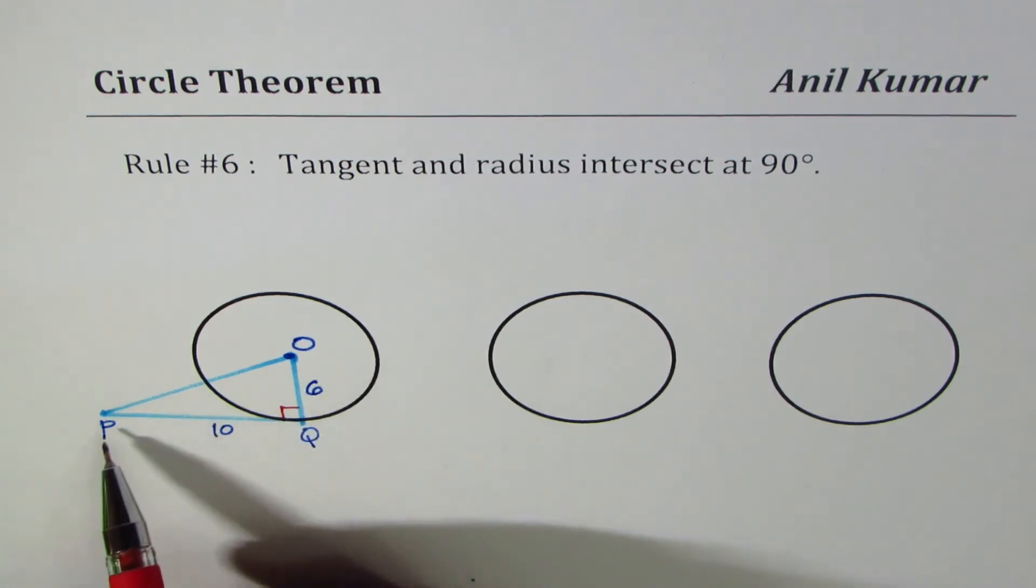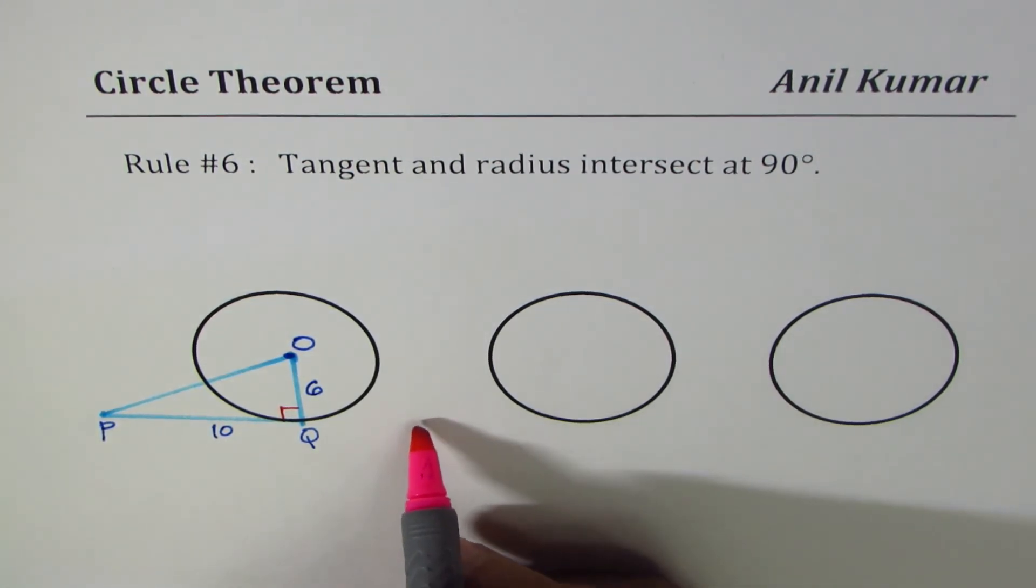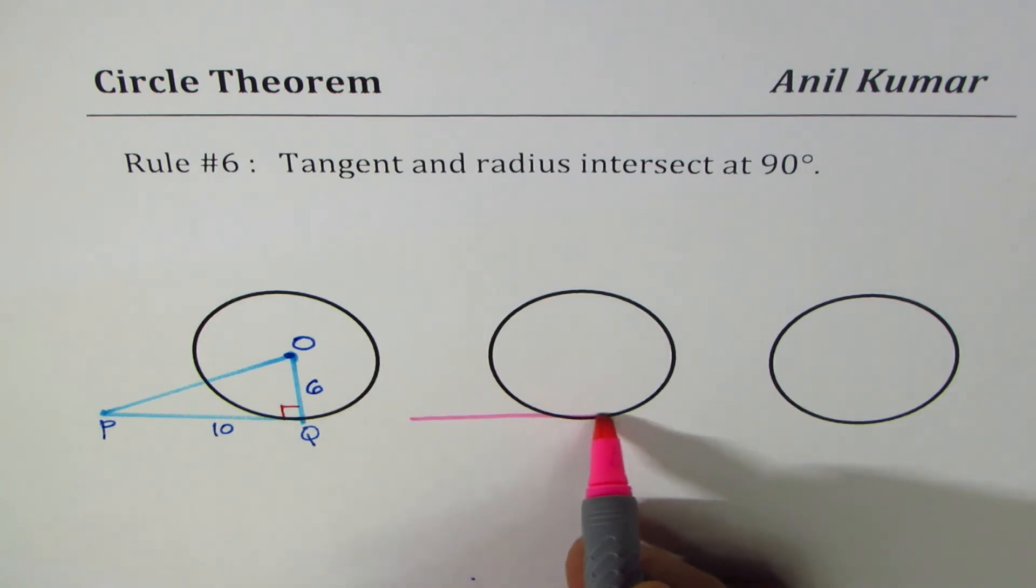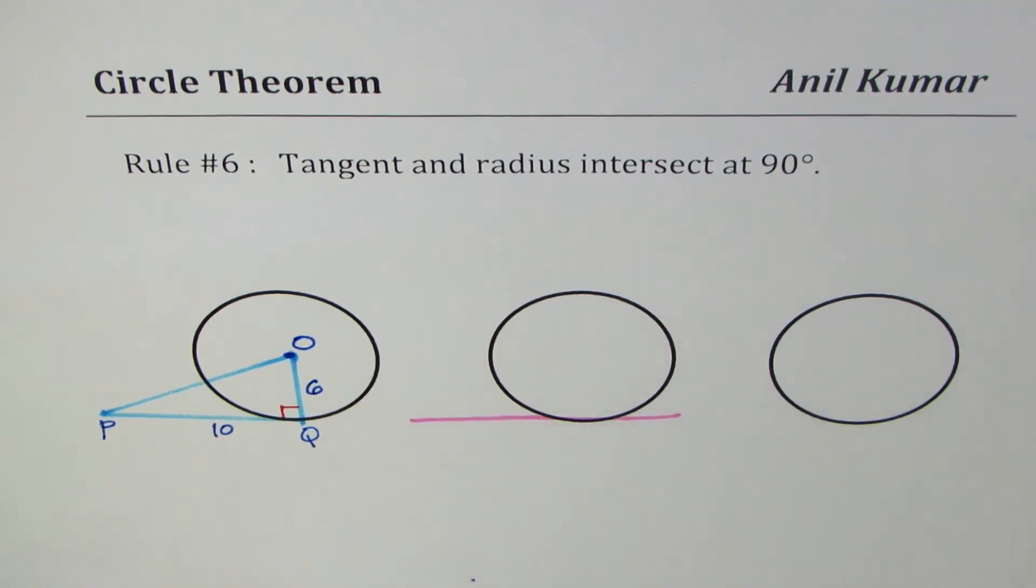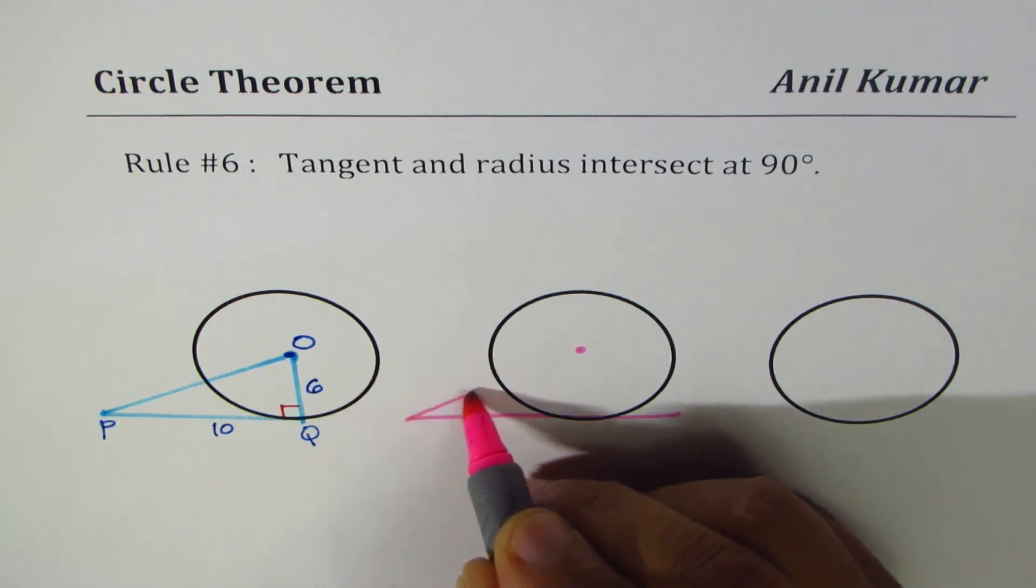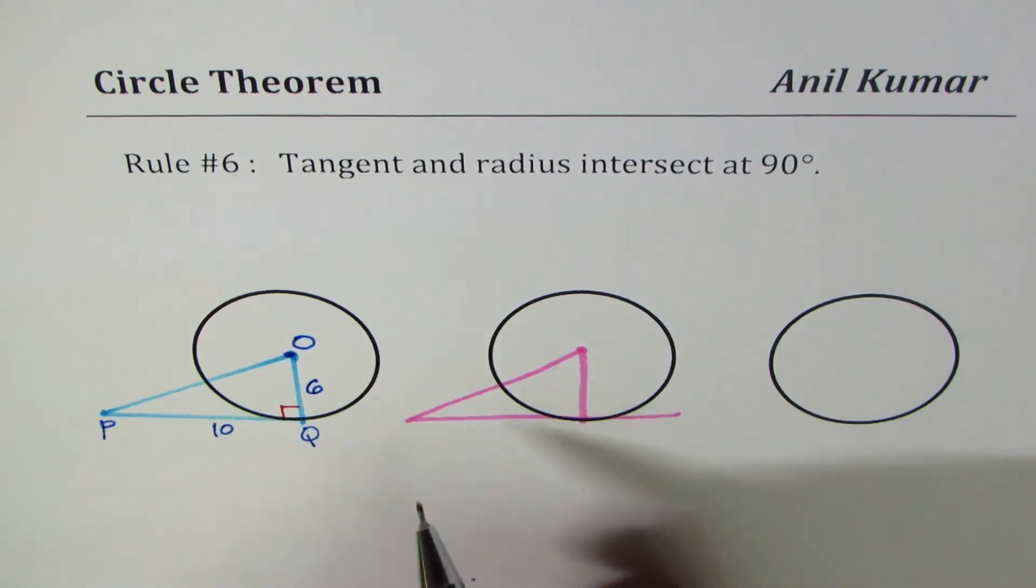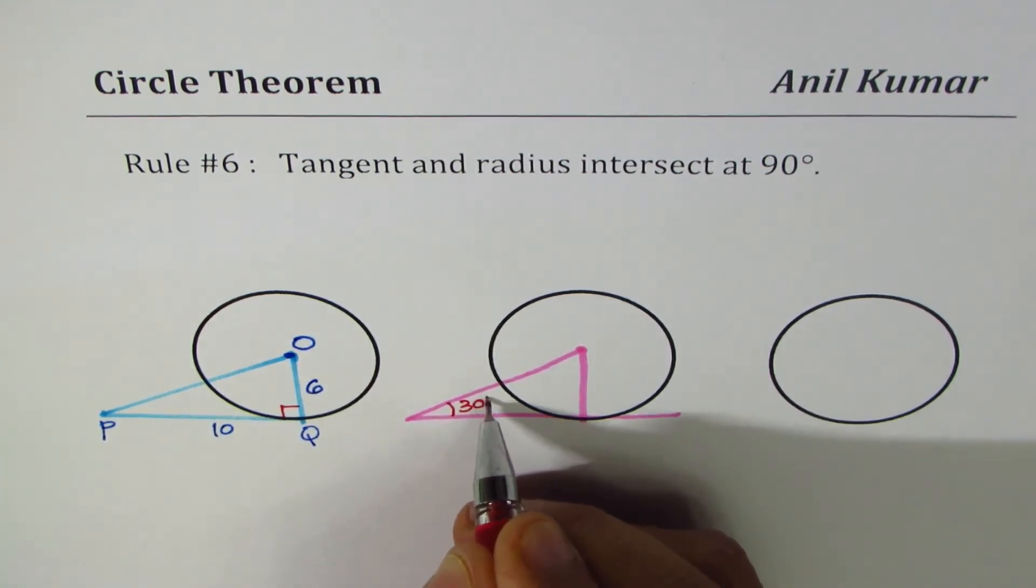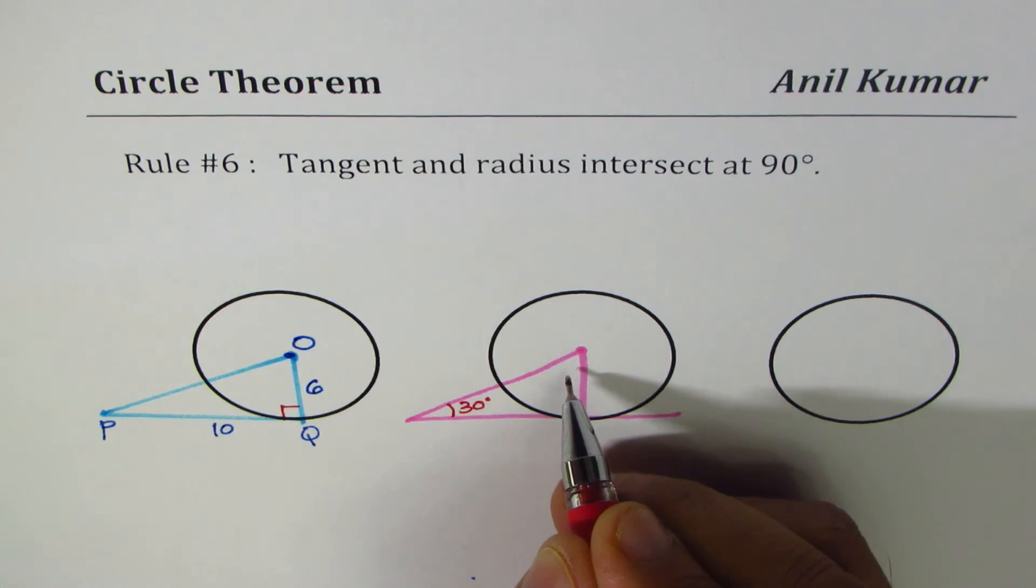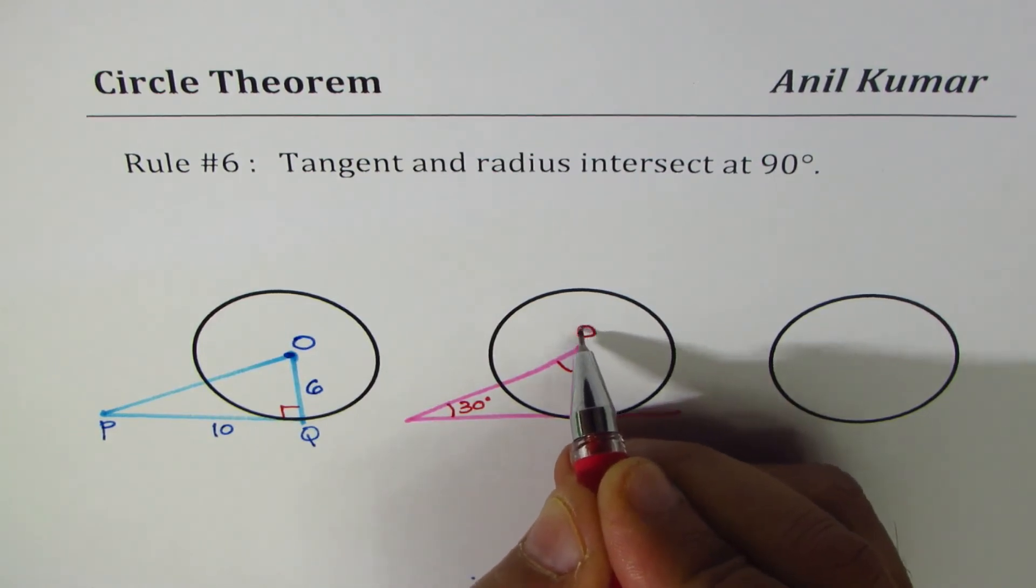You need to find the length of OP in this particular question. You could also have a question something like this. Let's say we have a line which seems to be a tangent, and we are given that with the center, we make an angle of, let's say, 30 degrees. In that case, what will be the angle at the center O?